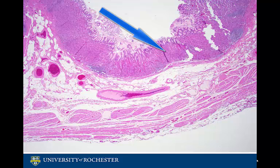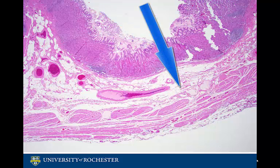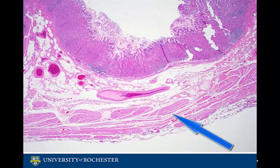Next is the submucosa, followed by the muscularis externa, and finally the serosa, also known as the adventitia.